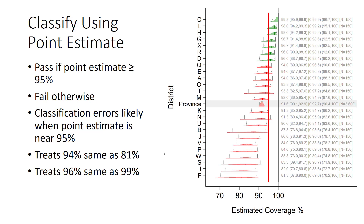It's very likely to make a lot of classification errors for strata where the estimated coverage is very near the decision threshold. It's quite possible that some strata will have had true coverage a little below 95%, but in the sample, the coverage will be a little above 95%, and vice versa — some strata will have true coverage a little above 95%, but their sample coverage will be slightly below.